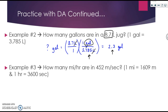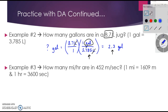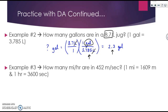Let's discuss example number three. In this example problem, you'll notice that instead of one unit, you now have two. You're given 452 meters per second and you're asked to calculate miles per hour. So we're going to convert meters to miles and seconds to hours. We're going to set the problem up in a very similar manner to before. I'm looking for miles per hour, so: question mark, miles per hour equals.